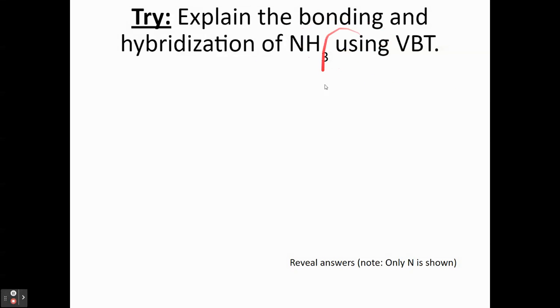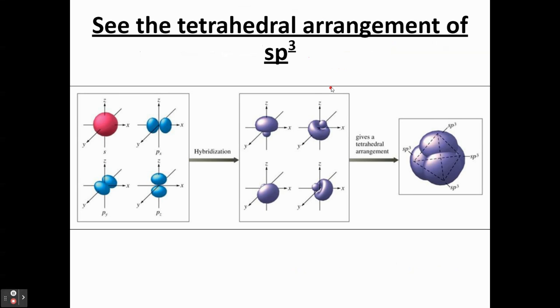And then you can try NH3, which we did in our notes already. And you can see here, this is the SP3 arrangement. Once you combine these, you get these. And if you connect all these together, you get your 109.5-degree bond angles.